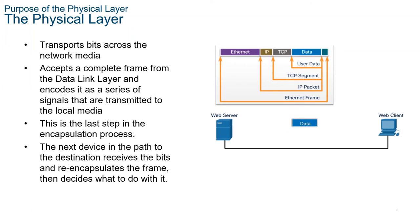The OSI physical layer provides the means to transport the bits that make up the data link layer frame across a data network. This layer accepts a complete frame from the data link layer and encodes it as a series of signals that are transmitted to the local media. The encoded bits that comprise a frame are received by either an end device or an intermediary device on the other end.